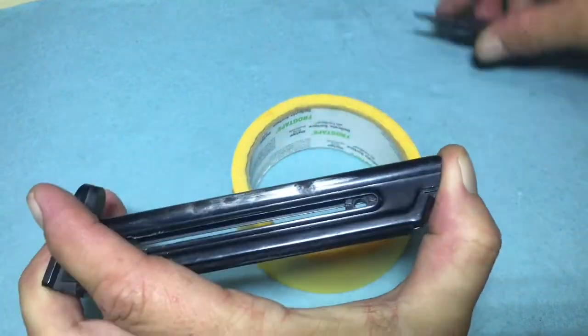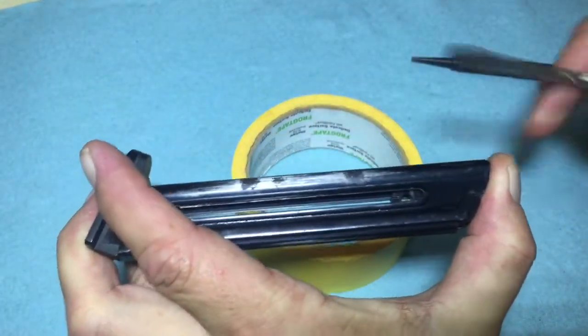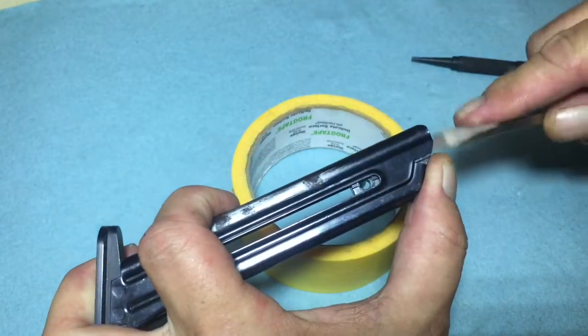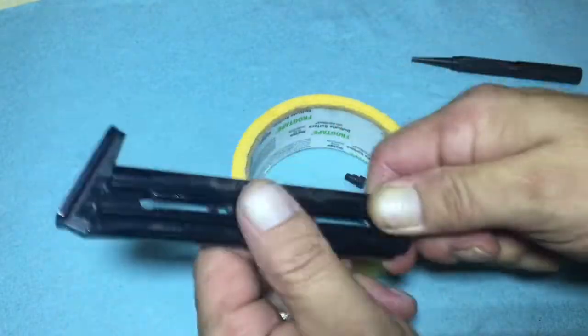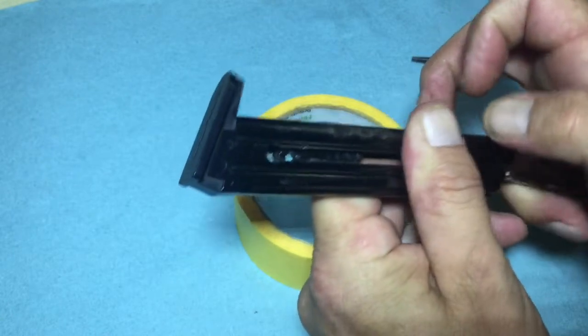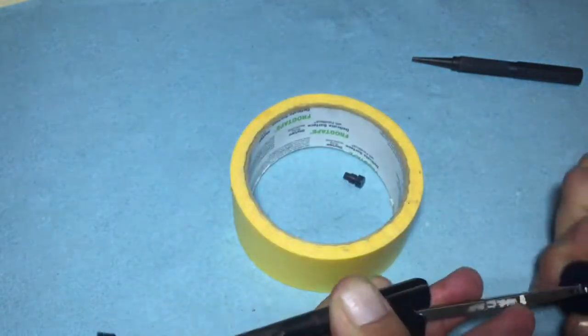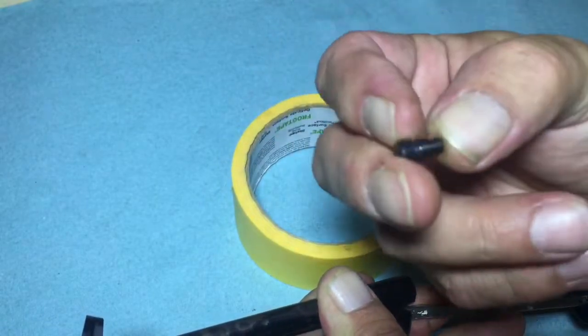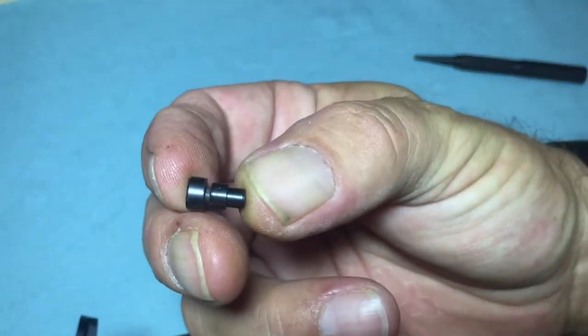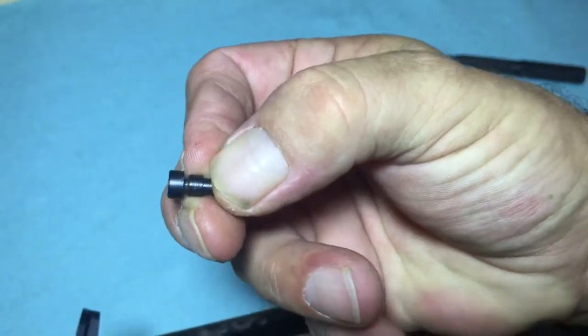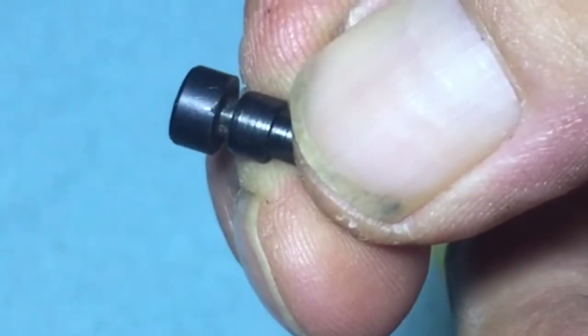Something you can utilize is a long screwdriver - this isn't one of the tools I originally said you needed, but it makes life a little easier. We're going to get that all the way in here. But before we do, I'm going to show you what you're trying to battle with. You will see that the metal of the magazine basically goes in that notch there.